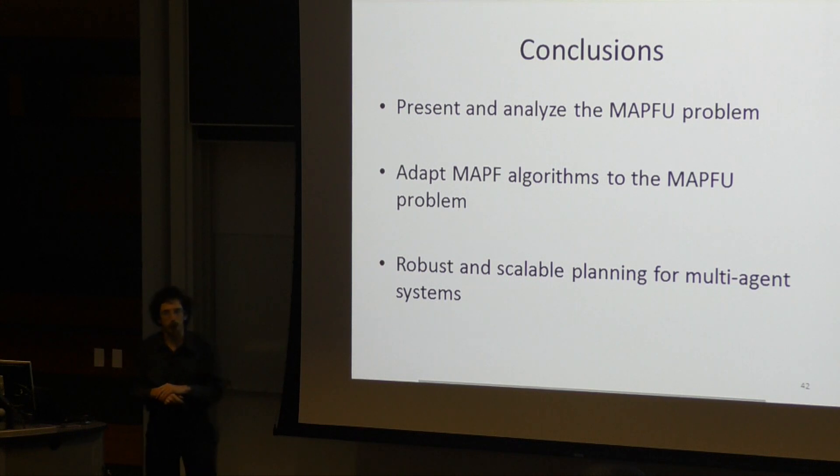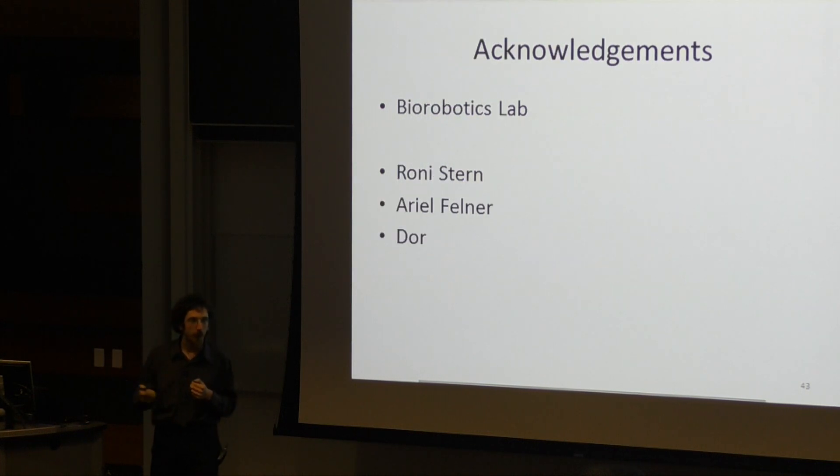In conclusion, we analyzed and presented the MAPFU problem in the context of belief space planning, showed how to adapt MAPF algorithms to the MAPFU problem, and discussed what properties they would or would not retain, and showed that we can get robust and scalable planning for multi-agent systems in this way.